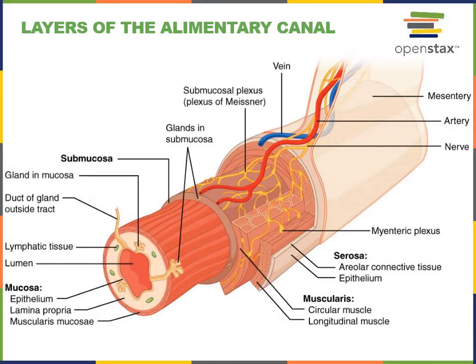The next layer superficial to the mucosa is the submucosal layer. The submucosal layer consists of mostly connective tissue that provides structural support for the alimentary canal and also provides a passageway for larger blood vessels and nerves to travel through.